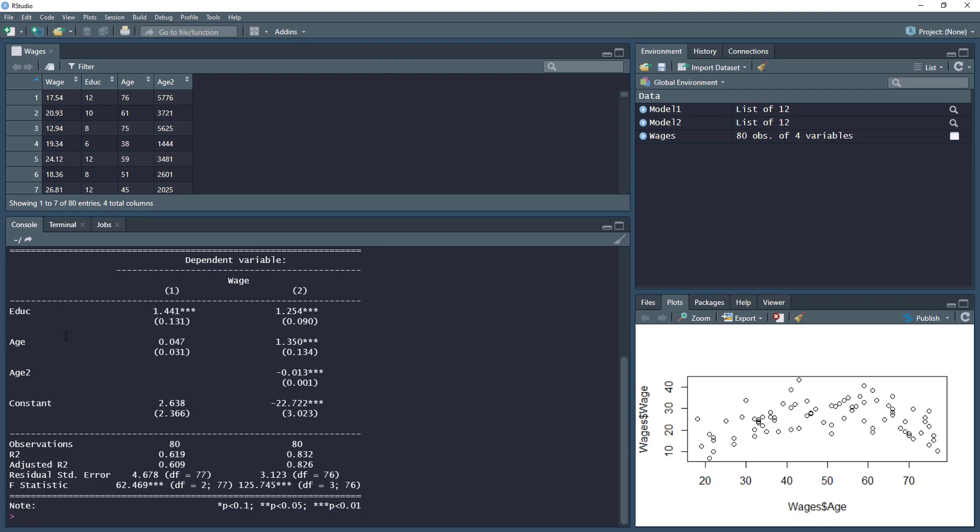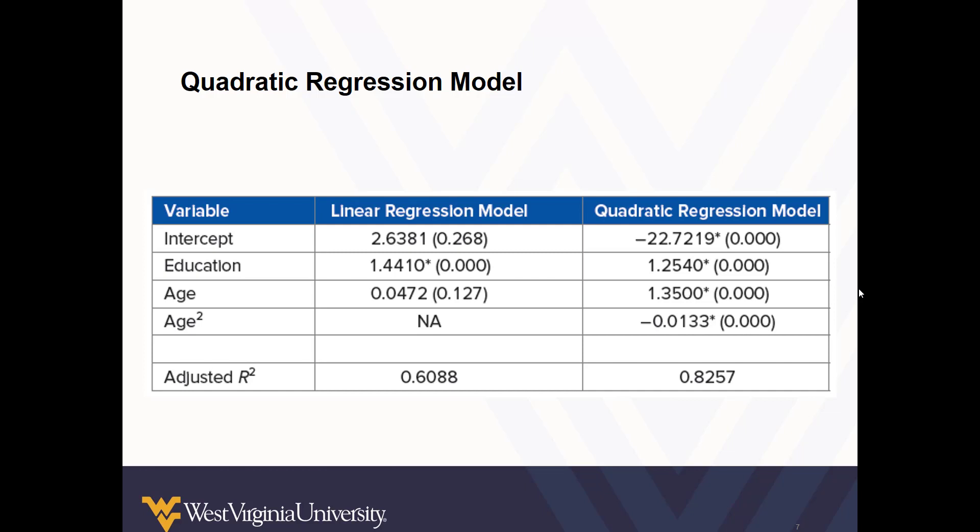Here we see that our second model where we raise age to the second power, that adjusted R² is substantially better. We find that in both scenarios, the overall model is significant by looking at the F statistic, but the second model, the F statistic is much larger. So that's a good sign that that model is a better fit. We can be fairly confident that adding in that quadratic makes sense for our model.